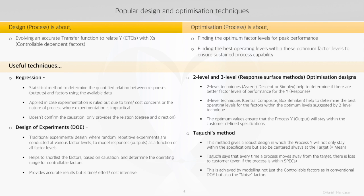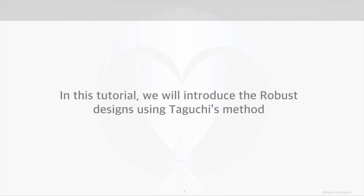One of the noise factors would be the paper type, as we do not have any control on the paper type that will be used by the consumer, and it does impact the print quality. This method allows us to conduct experiments at different levels of the noise variables to factor in their impact and then accordingly design the product. In this video we will walk through Taguchi's method to learn how this technique is used in creating robust designs.